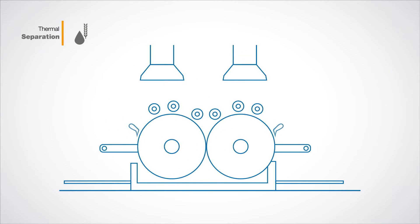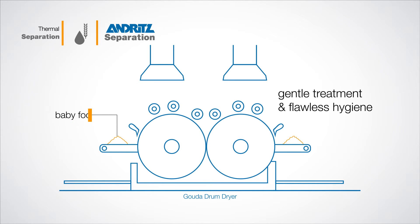In the food industry, thermal drying is often an essential production step before packaging dry products like sugar, cereals, starch and proteins. The gentle treatment and flawless hygiene of the Andritz Separation Gouda Drum Dryer even qualifies it for the production of baby food.